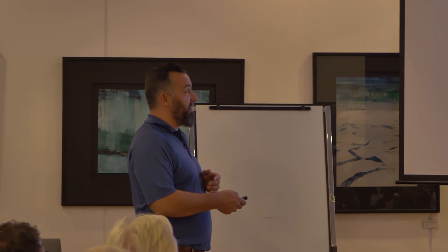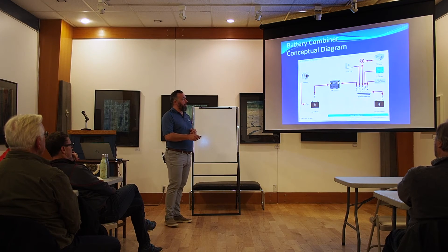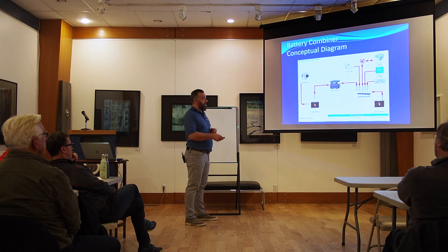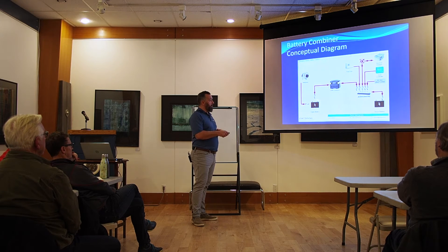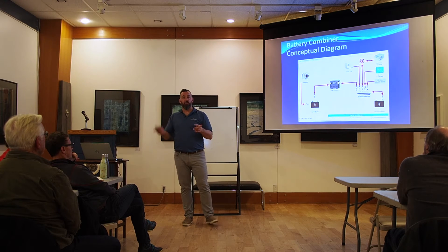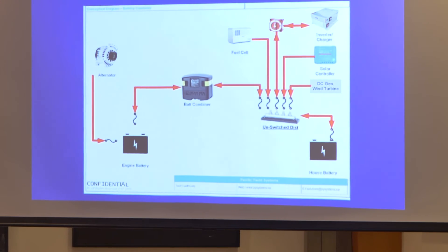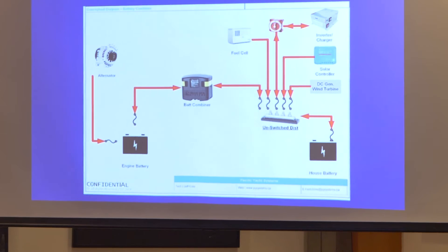So this battery combiner, the purpose of that device is to allow either, notice the arrows, is to allow either the engine battery recharge the house battery or allow what is happening at the house battery recharge the engine battery. So it's a bi-directional device. It's a device that allows current in either direction. It's truly like a pipe. You put a pipe in the ground, water can flow one way or it can flow the other way.